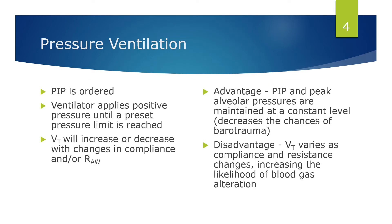In pressure ventilation, the peak inspiratory pressure is ordered by the physician and set on the ventilator. In this type of ventilation the peak inspiratory pressure is set and will not change — the ventilator will apply positive pressure until a preset pressure limit is reached. The tidal volume, however, will change: it will increase or decrease with changes in compliance and/or airway resistance.